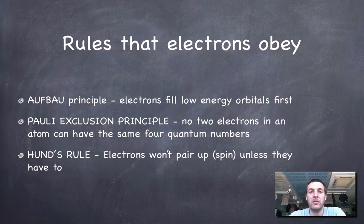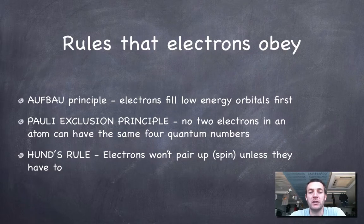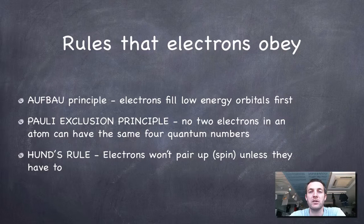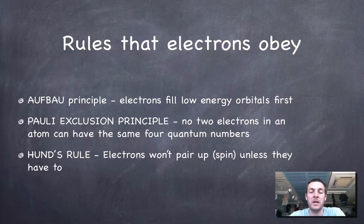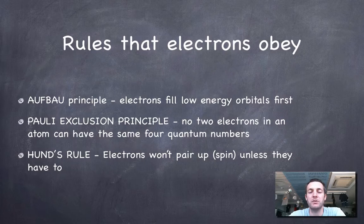The Pauli exclusion principle is stated in lots of different ways, but it basically says that no two electrons in an atom can have the same four quantum numbers, which we looked at in the last film. This is like saying that no two electrons can have exactly the same spin in the same orbital in the same subshell of the same shell.